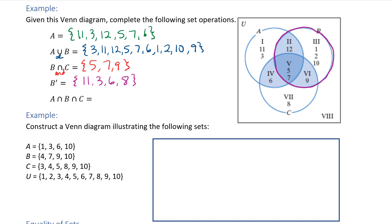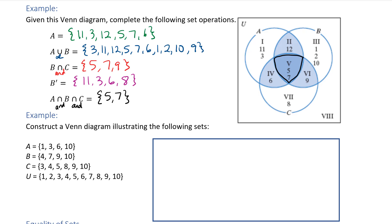Our last example is A intersect B intersect C. Intersect means 'and,' so an element has to be inside all three circles at the same time. The only section in all three circles is that very middle region, and the elements there are 5 and 7. That's how you do set operations with Venn diagrams.